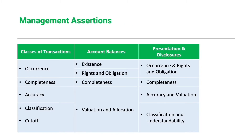Here is the comparison of the different management assertions under each category. For classes of transactions, we have occurrence, which emphasizes the potential overstatement. The equivalent in account balances is existence. So if we are talking about classes of transactions — revenues, expenses — then we talk about occurrence. But when we are talking about account balances — assets, liabilities, equity — we talk about existence rather than occurrence.